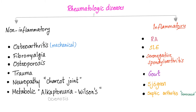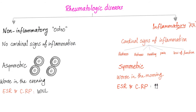Rheumatological disease could be non-inflammatory or inflammatory. Osteoarthritis is non-inflammatory. Now granted, you might find some white blood cells in the joint when you aspirate the joint, but this is not what's fueling the disease. We have talked about the difference between non-inflammatory and inflammatory arthritis before in this playlist, so watch my previous videos.